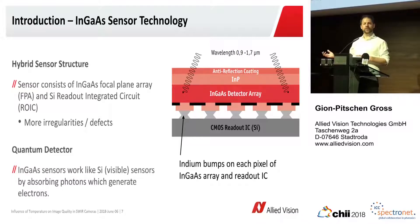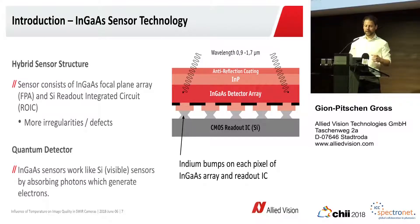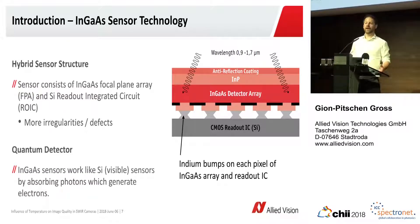Some words about InGaAs sensors, which we use in our SWIR cameras. They are different beasts to the visible sensors — the silicon sensors — which we all know. They are based on an InGaAs photodiode and a CMOS readout circuit. The two are bonded together on a pixel-by-pixel basis, and that leads to more irregularities and defects in those sensors, which we need to correct and take care about. In contrast to other infrared sensors, these infrared sensors are also quantum detectors — they detect photons and convert them to electrons — in contrast to long-wave infrared sensors, such as microbolometers, which work on a different principle.